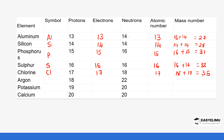Argon has the symbol Ar. The number of protons is 18, which equals the number of electrons for a neutral argon atom. The neutrons are 22. The atomic number is 18. For the mass number, we take the number of neutrons which is 22, plus the number of protons which is 18, giving us 40.